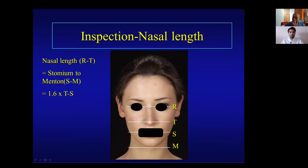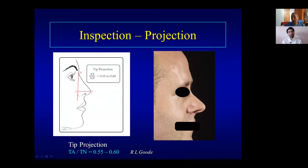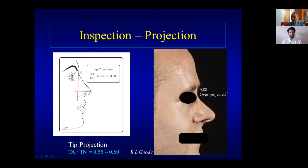Then the projection of the tip. Some tips are obviously over-projected, but when it's not obvious you can use the Goode equation: measure from the nasal base to the tip, and from the tip to the alar groove, then divide. A ratio of 0.55 to 0.6 is normal. In one patient we measured 0.88, confirming over-projection. This can be measured on a facial photograph as well.